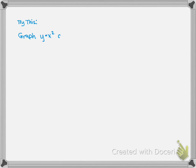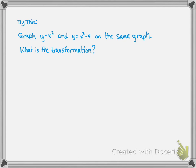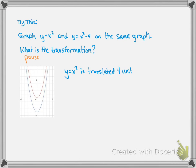Try this: graph y equals x squared and y equals x squared minus 4 on the same graph. What is the transformation? Pause while you graph and try to state what the transformation is, then play again to check your answers. y equals x squared is in red, y equals x squared minus 4 is in blue. y equals x squared is translated 4 units down to create the new graph — that's the transformation.